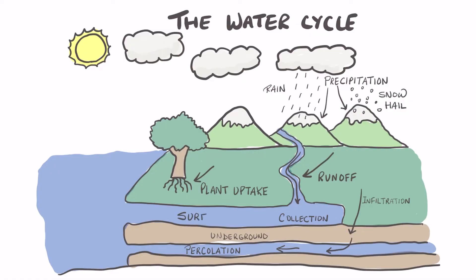The percolated water, together with the surface water that has been collected from the runoff, makes its way into the oceans of the world. Although plants take up water from the soil and use it for growth, they also lose water via a process called transpiration, and water goes into the atmosphere that way.